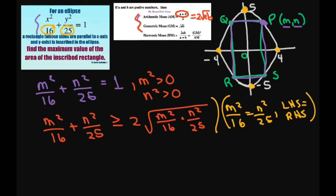So basically we already know what this equals. This equals 1. So 1 is greater than or equal to, now when I take the square root of m squared times n squared divided by 16 and 25,